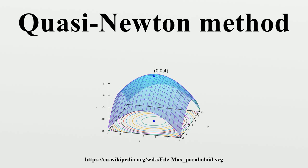The method uses the left inverse of the Jacobian matrix. Strictly, any method that replaces the exact Jacobian with an approximation is a quasi-Newton method. The chord method, for instance, is a simple example. The methods given below for optimization are other examples.